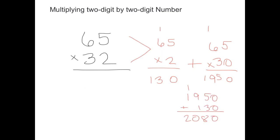The answer to sixty-five times two plus sixty-five times thirty is two thousand eighty. So that is the answer we should get when we use our traditional algorithm to multiply here.